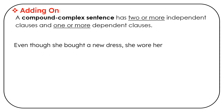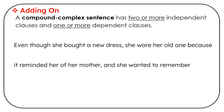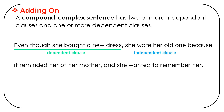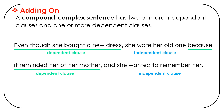Even though she bought a new dress, she wore her old one because it reminded her of her mother, and she wanted to remember her. We start out with a dependent clause — even though she bought a new dress — because it starts with a subordinating conjunction, even though. Then she wore her old one is an independent clause. Because it reminded her of her mother is a dependent clause starting with because. And she wanted to remember her is an independent clause joined with a comma and the coordinating conjunction and.